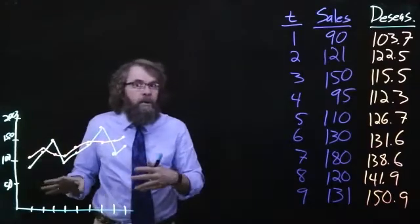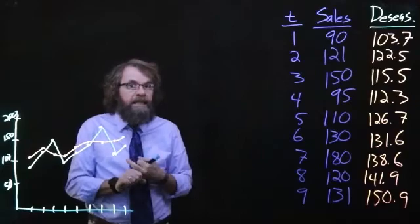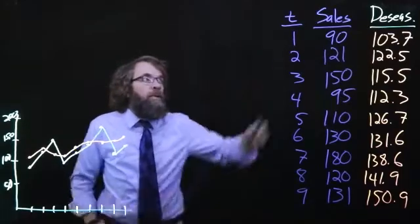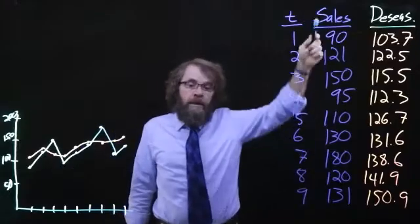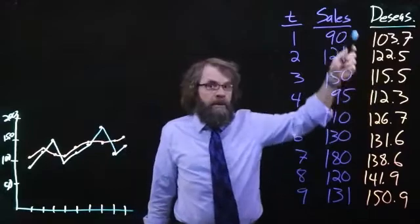So in the last video, what we did was we took the original data and we divided it by the seasonal indexes to get the de-seasonalized data. So we have the original sales numbers here in this column, and then we have the de-seasonalized numbers here in this column.